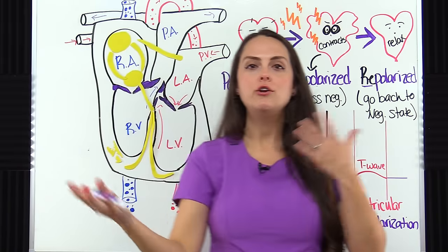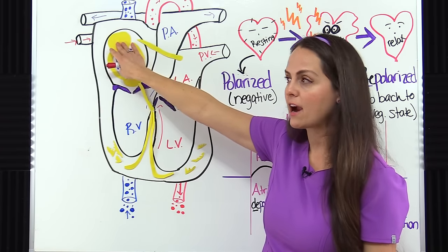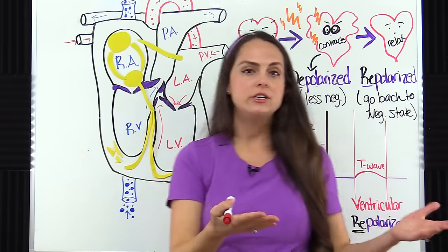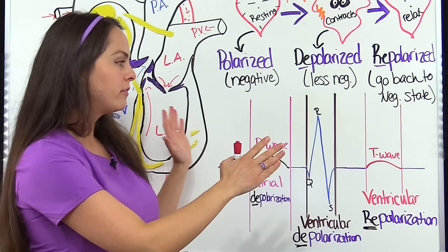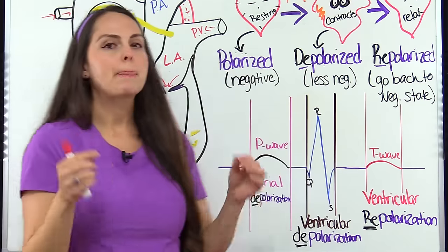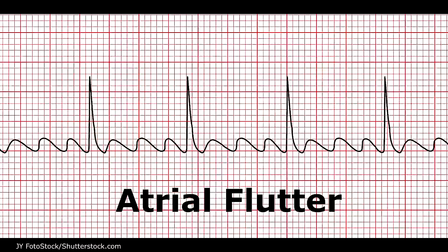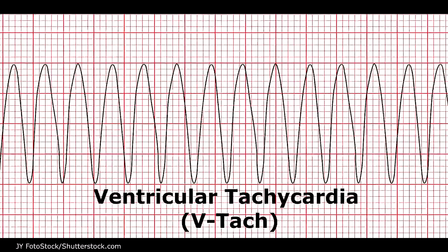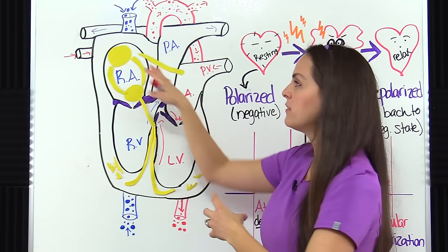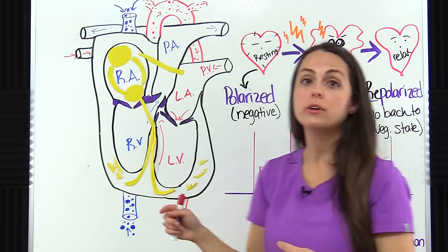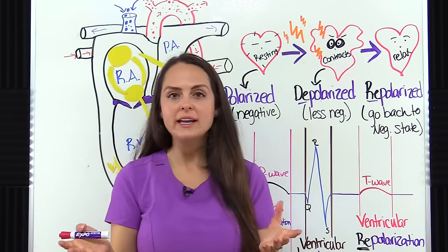If everything is occurring normally - originating from the SA node, firing the way it should - we should have on our EKG strip a beautiful normal sinus rhythm with all its parts measuring and forming perfectly. But if there's an issue with this system, we can get dysrhythmias like atrial flutter, atrial fibrillation, VTAC, and so forth. Now let's see the heart in action - how it actually contracts and relaxes when stimulated by this electrical conduction system, creating this PQRST complex.